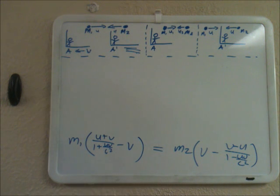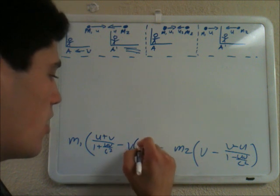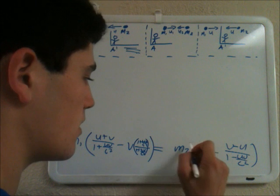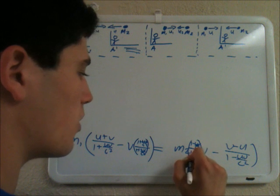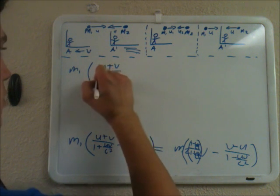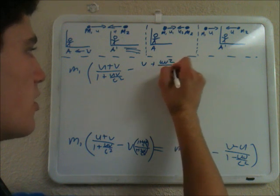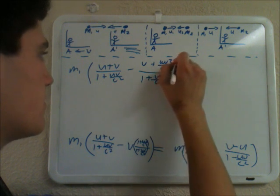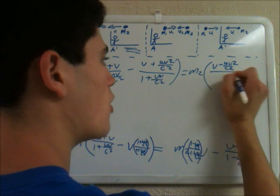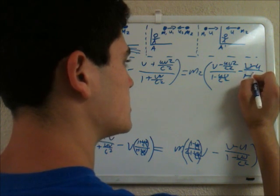Now we simplify by multiplying v by (1 + uv/c²)/(1 + uv/c²) on the left side and by (1 − uv/c²)/(1 − uv/c²) on the right side to get common denominators. Distributing v gives m1·[(u + v − v − uv²/c²)/(1 + uv/c²)] = m2·[(v − uv²/c² − v + u)/(1 − uv/c²)].